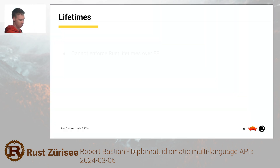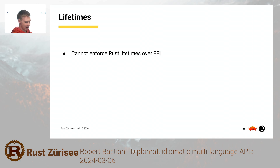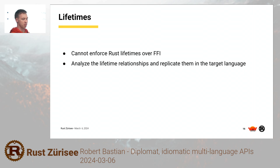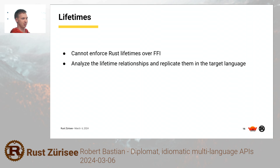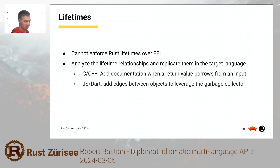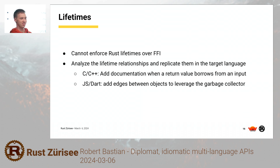No Rust talk would be complete without talking about lifetimes. Obviously lifetimes are not a C ABI feature, so we can't really enforce anything. However, Diplomat does a full lifetime analysis — when it parses your code it looks up all the lifetimes and tracks which arguments and return types come with which lifetimes, then replicates them in the target language. In C it just adds a comment saying this has to live as long as that. In JavaScript and Dart we can do something more clever: we abuse the garbage collector — for every lifetime we add a back edge to our objects, so the garbage collector keeps them alive according to the lifetimes. This is probably the trickiest part to implement in Diplomat, and we're still working on it for more complex scenarios.